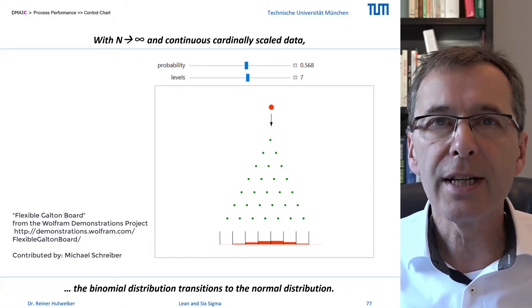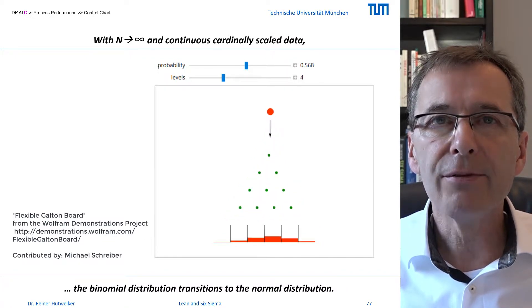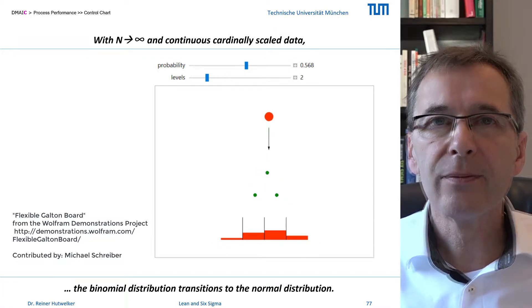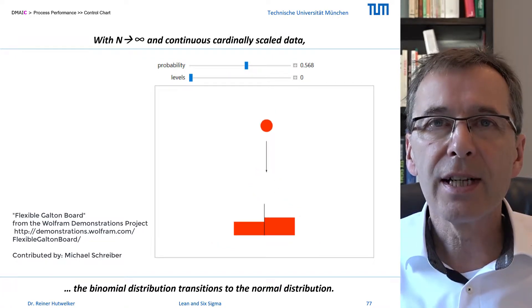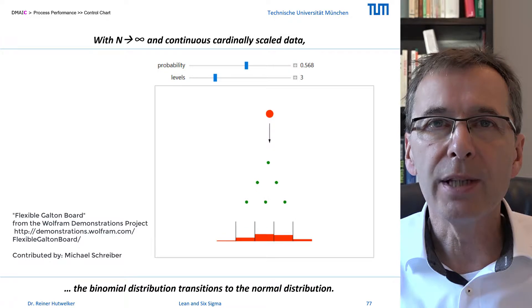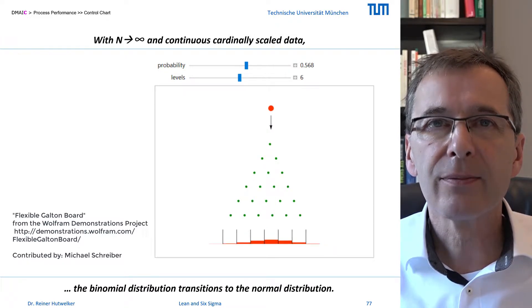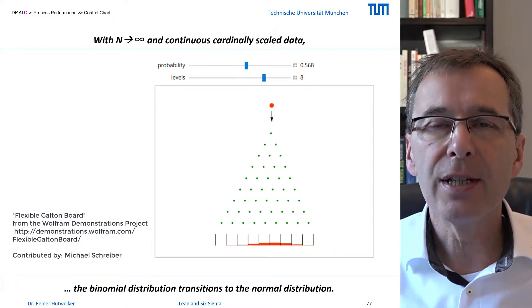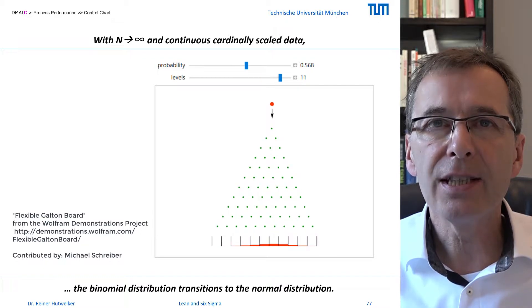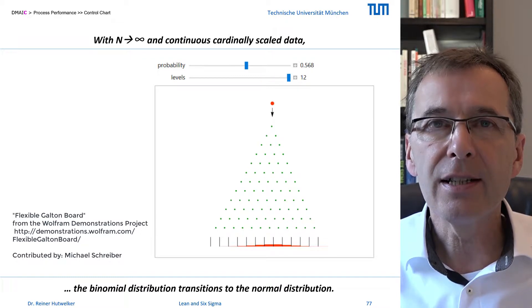The distribution of data of cycle types can be steep on the left and skew on the right because the cycle types cannot fall below a lower limit but can take any value upwards. Except for the skewness, however, the cycle types can be free of any systematic influences, i.e. special causes.